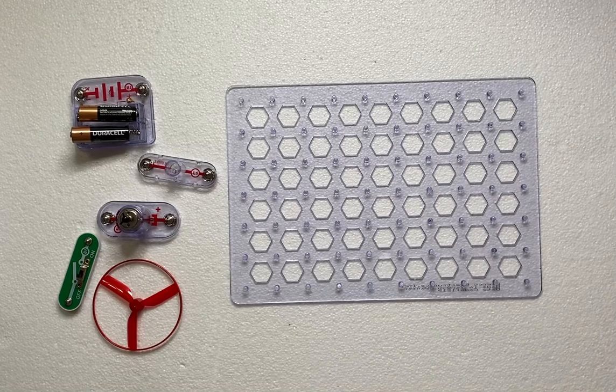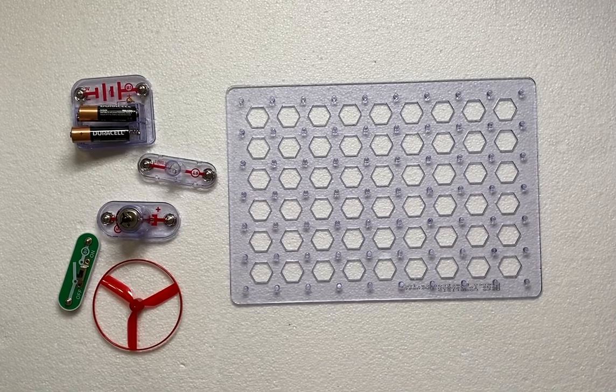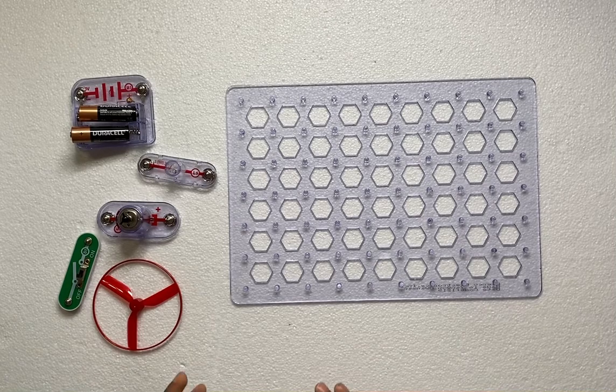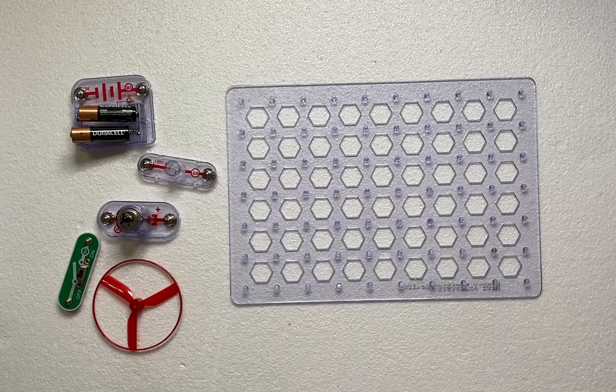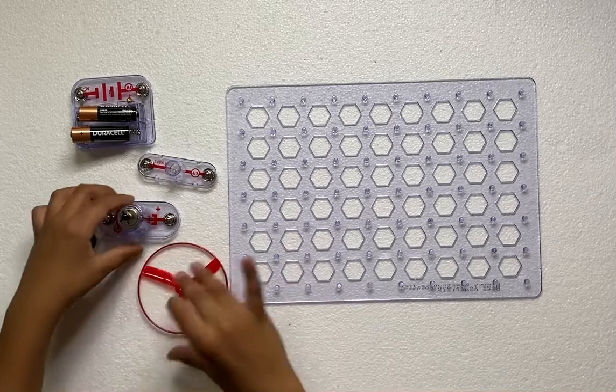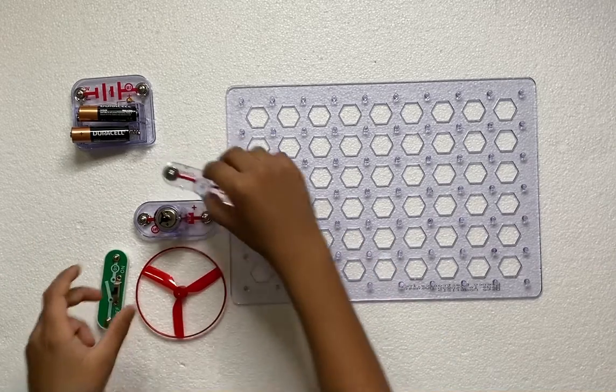Okay, so project five is lamp and fan in series. This project shows how a lamp can indicate when a fan is running. These are the pieces we need: a fan, a motor fan, slide switch, lamp, and the battery holders with the batteries.